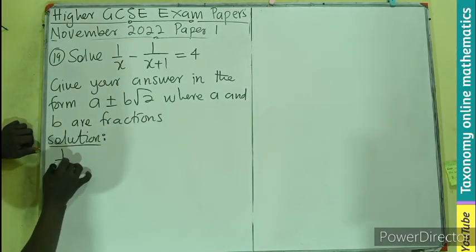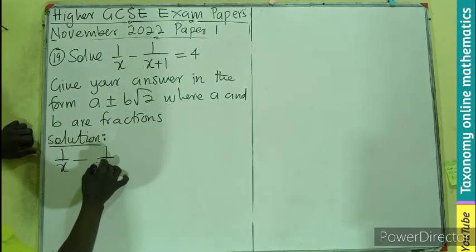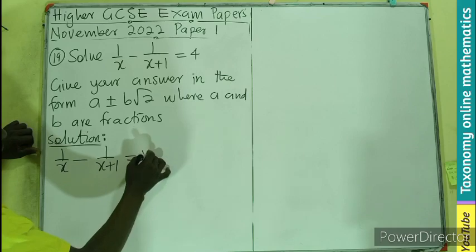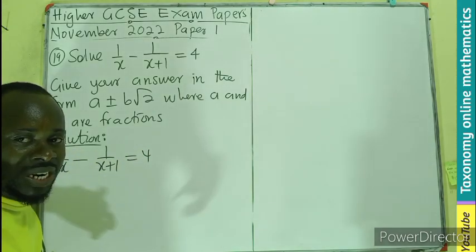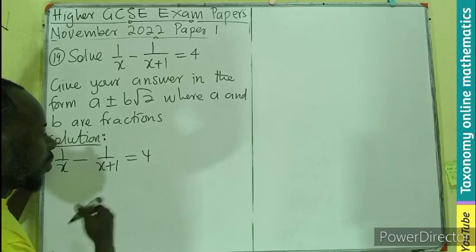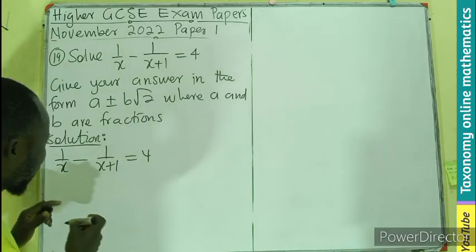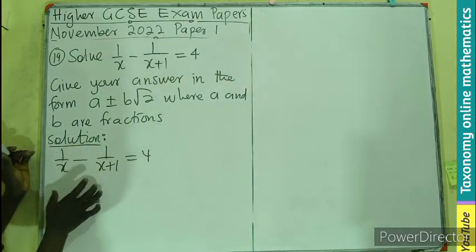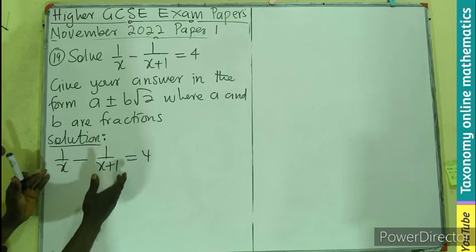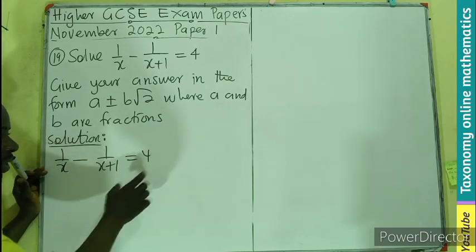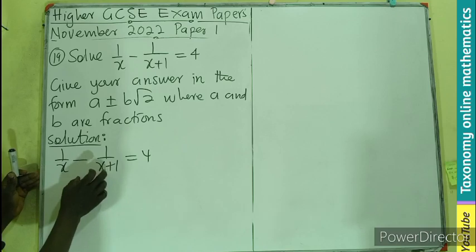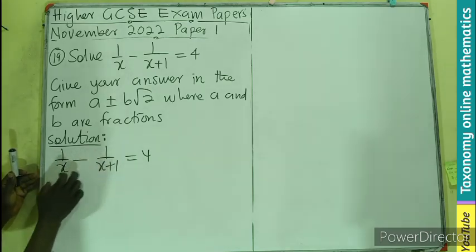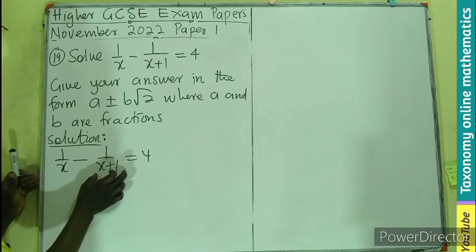So 1 over x minus 1 over x plus 1 equals 4. Since we have an equation that contains fractions, we multiply it through by the LCM. In this case, let's deal with the left first, then we take the right. So if we take the left, the LCM will be the multiple of the two denominators.